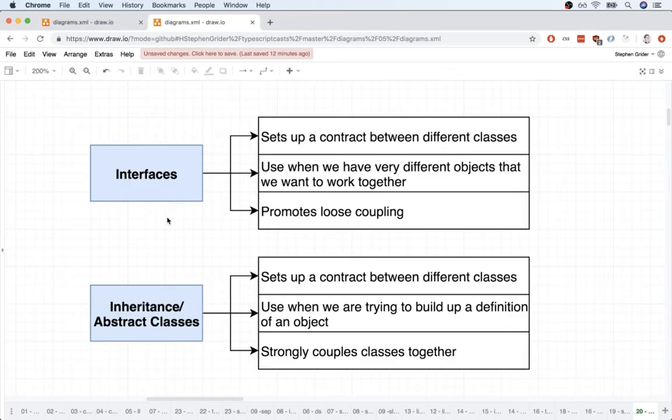Okay, so here we go. First off, an interface allows us to easily set up a contract between different classes. Remember, this is when we originally had the sorter.